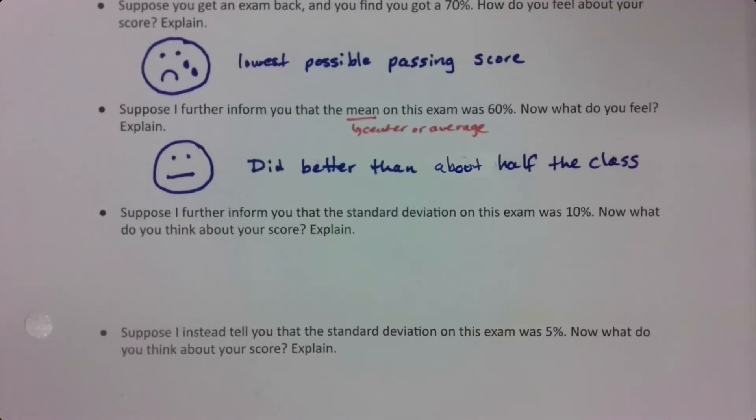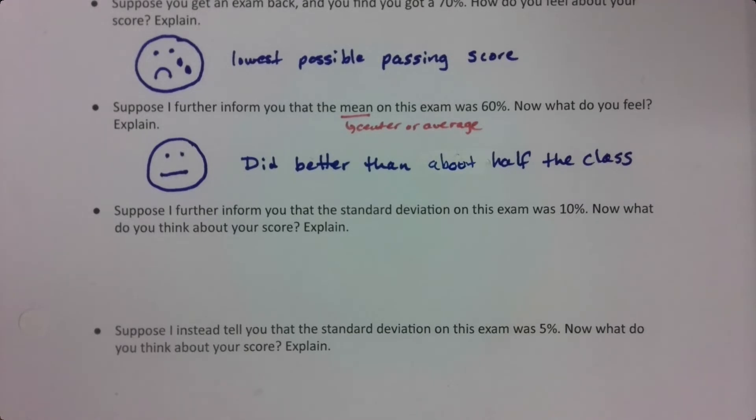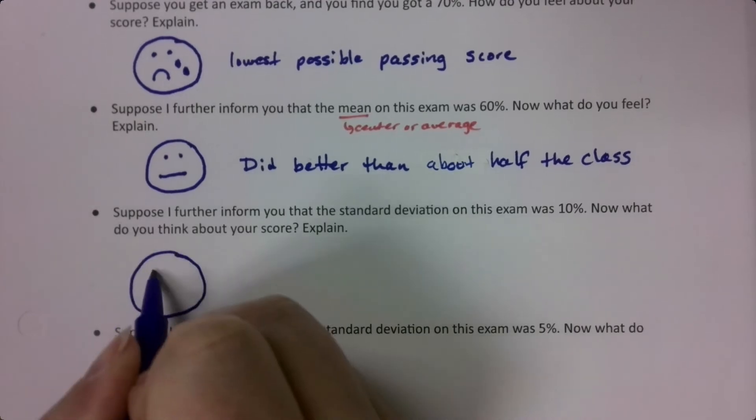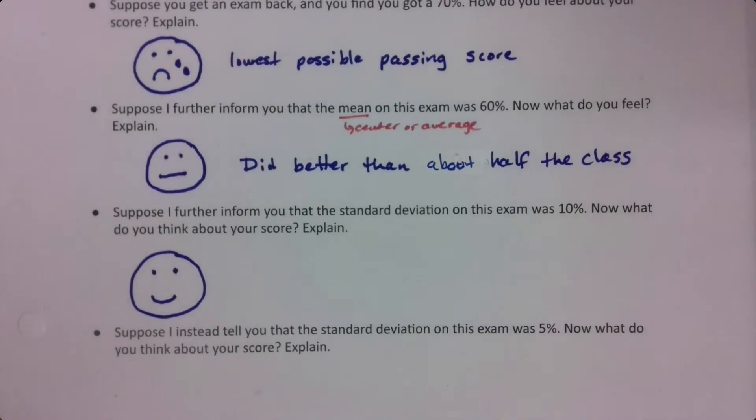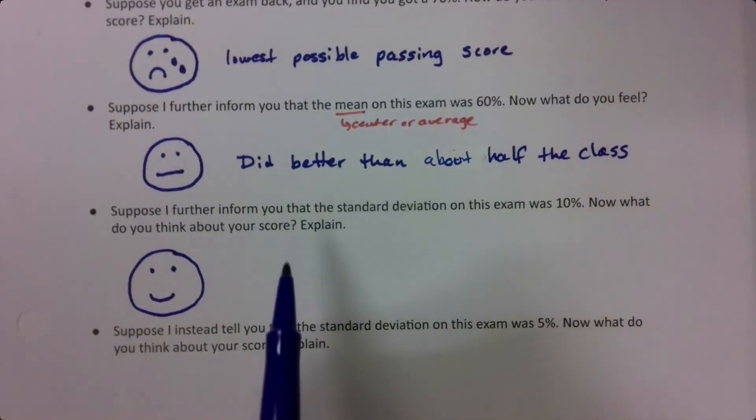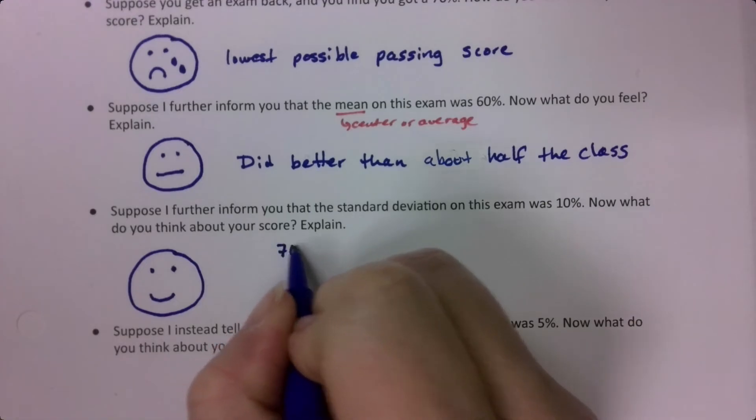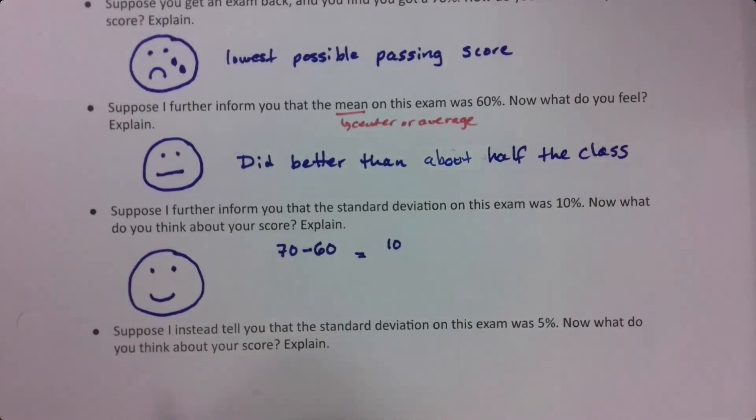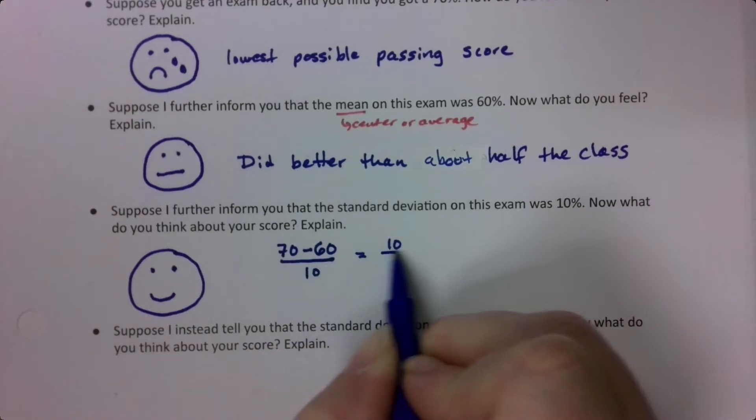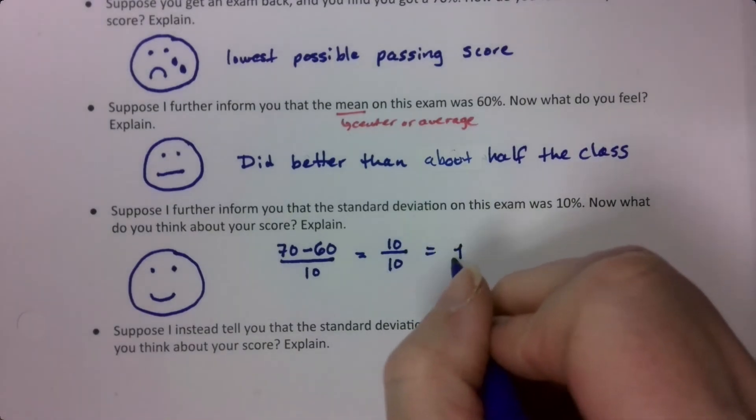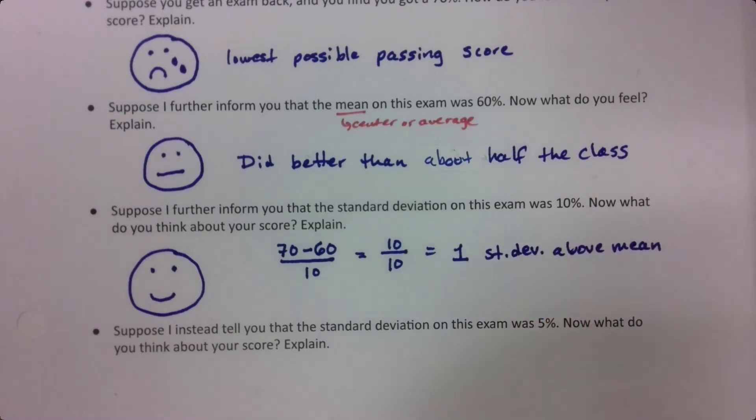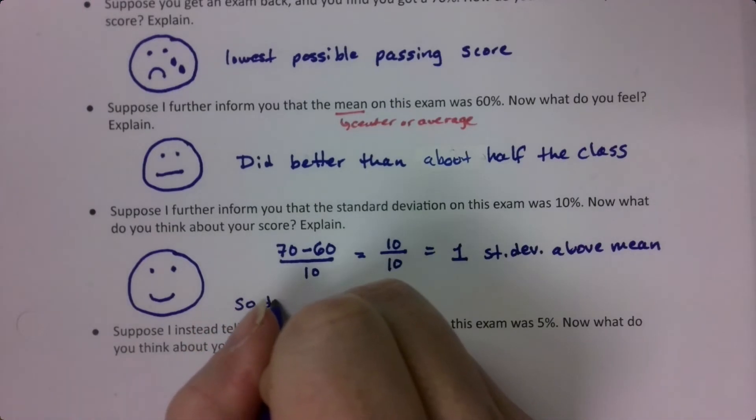Now suppose I further inform you that the standard deviation on this exam was 10. Now what do you think about your score? And now we're going to give you a slight smile. Now why? Well, let's think about this. You scored a 70 and the mean was 60, which means there was a difference of 10. If you know that the standard deviation is 10, then you know you scored one standard deviation above the mean. So you did pretty well.